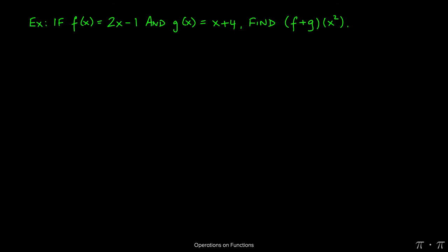Let's say we're given f of x equals 2x minus 1 and g of x as x plus 4, and the task at hand is to find f plus g of x squared. We start as usual with just defining